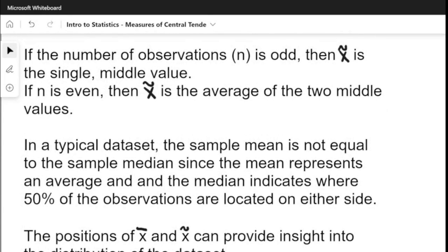If the number of observations n is odd, then the sample median is the single middle value. If n is even, then the sample median is the average of the two middle values.